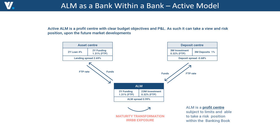From the other side, on the deposit center, we can see that the deposit spread is negative — so the deposit center is not making money with this product. But imagine that instead of the correct FTP rate of 0.32%, the ALM gives this center 1.5%. That creates a positive spread for the deposit center instead of a negative one, even though the fair FTP rate for three-month funding is 0.32%. This is what is meant by hiding underperforming products.